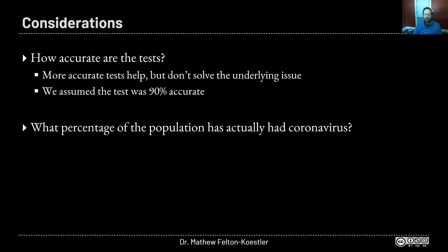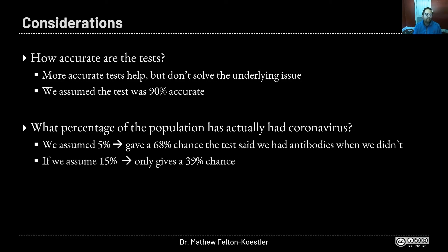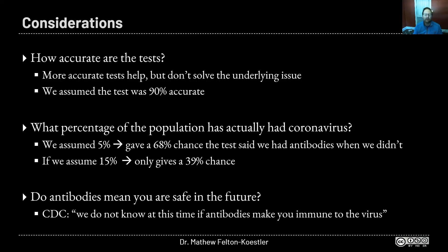The other really big variable is what percentage of the population has actually had the coronavirus. In the article they mentioned, it looks like right now in the U.S., it's somewhere between 5% and 15% of the population. In our example, along with the 90% accurate test, we said we're going to assume 5%. And that gave us this 68% chance of the test telling us, hey, you have antibodies when you really don't. If that changes, if we say, oh, we think 15% of the population has had the virus, then that lowers that incorrect false positive to 39%. That's a lot better, but it's still not great. Finally, please remember that we don't know for sure about whether antibodies keep you safe, or if they do keep you safe, how long that means you're immune for. So that's important to keep in mind.